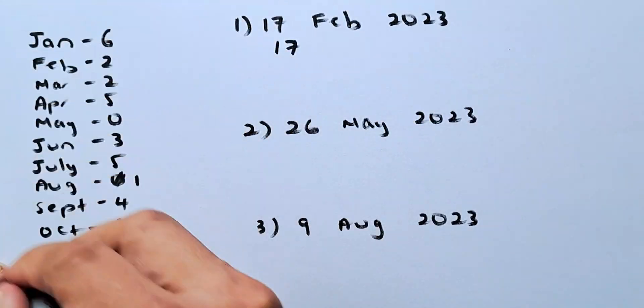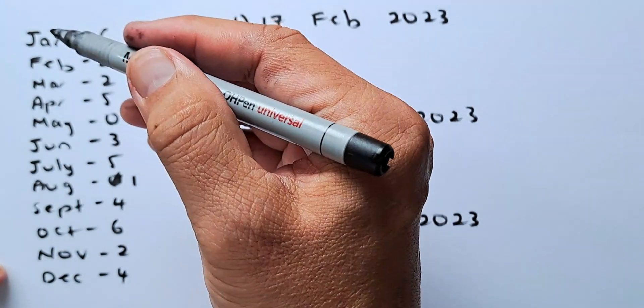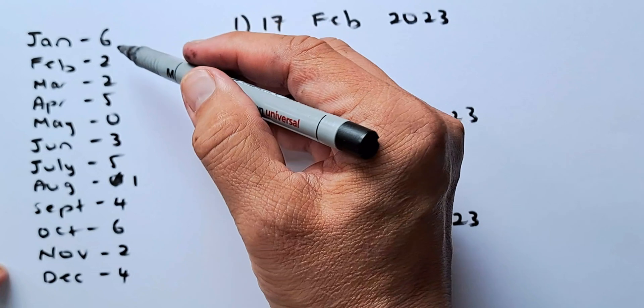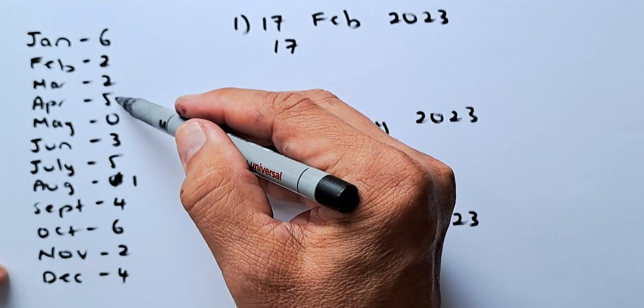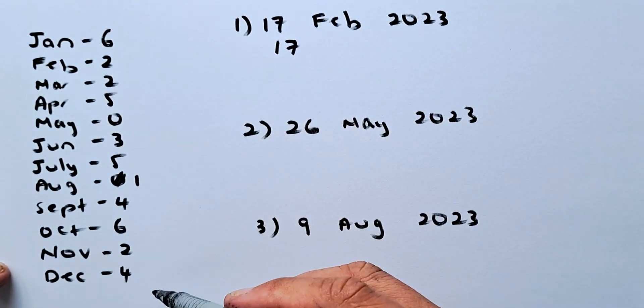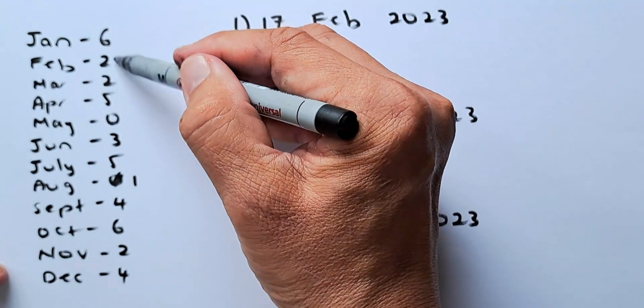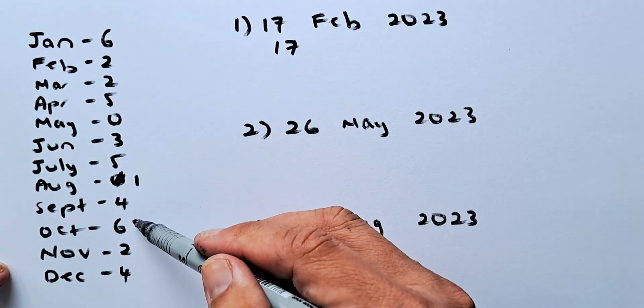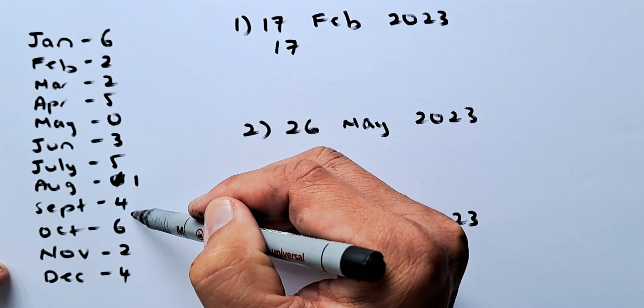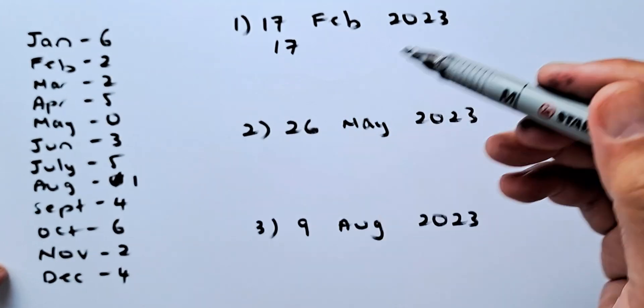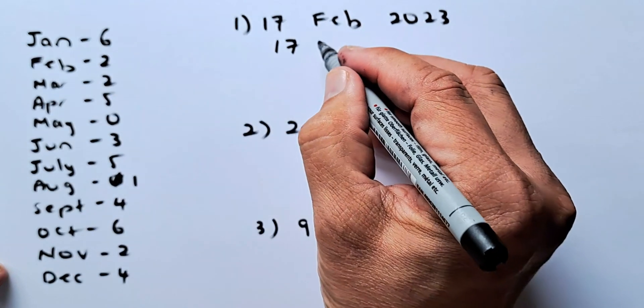February, you have to look at this chart here. Every month has a number associated with it. For example, January is 6, February is 2, March is 2, April is 5, May is 0 and so on. Remember this is quite simple. The first three numbers are going to be 6, 2, 2 and the last three months are going to be 6, 2, 4. The middle numbers are going to be 5, 0, 3 and 5, 1, 4. So February, we look at February is 2, so we're going to add 2.